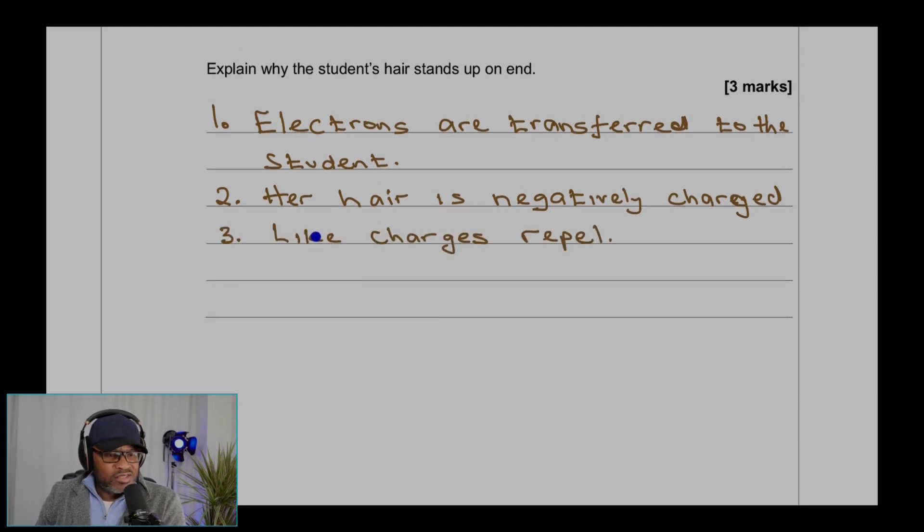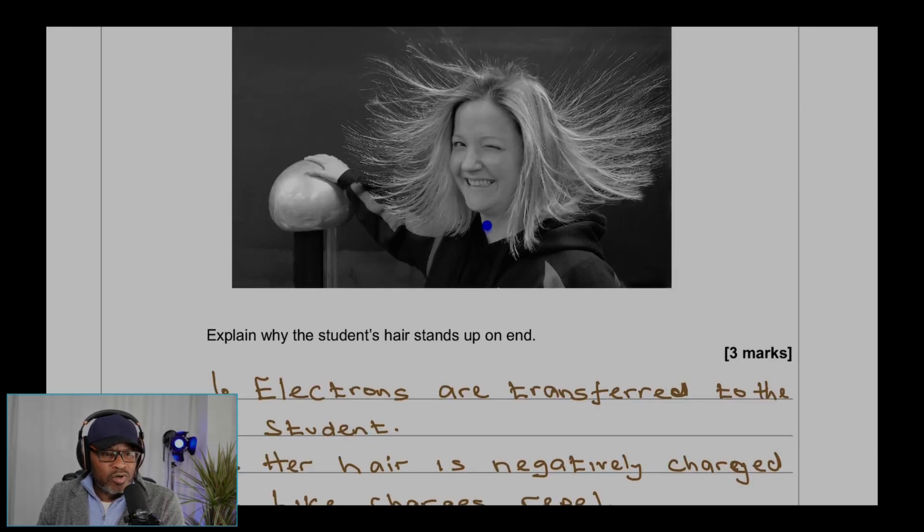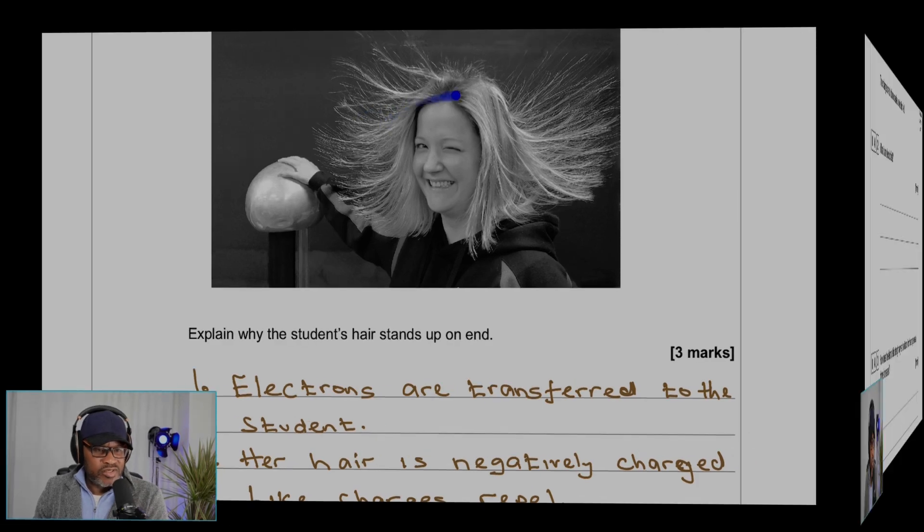Point number three: because negatives are everywhere in the hair, the negatives repel each other. Like charges repel, and that's why between each strand of hair these electrons are repelling each other, so they stand up separately.